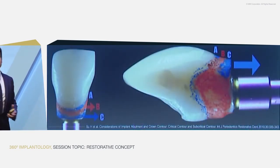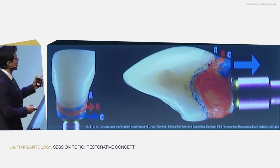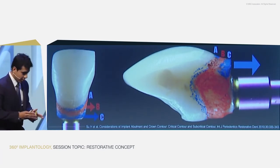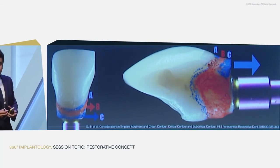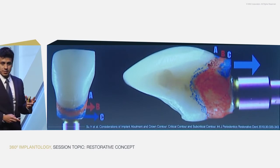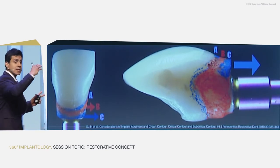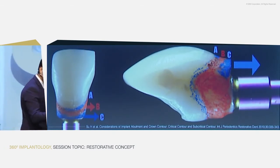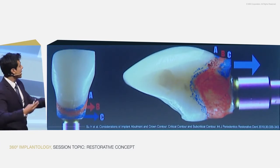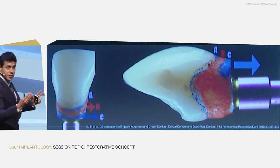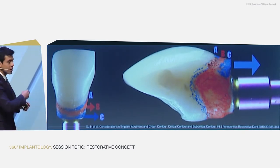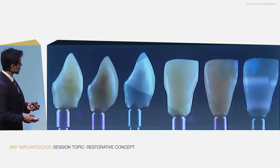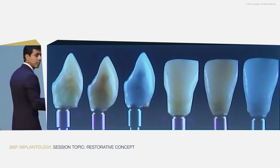Now we have to understand how to manage the tissue. Line A is the gingival level. Line B is one millimeter above the gingival level. We have to work only at level C. In the sagittal view, playing at level C creates a concavity. That concavity provides space for a blood clot or a soft tissue graft. In the frontal view, we remove the sharp square angles to provide a smooth area for our provisional.